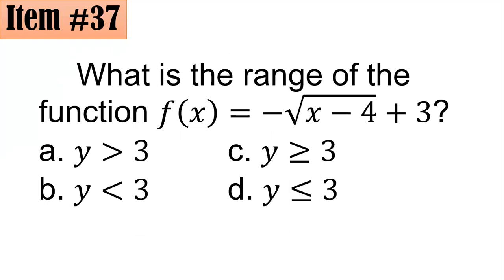Item 37: What is the range of the function f(x) equals negative square root of (x minus 4) plus 3? Is it y greater than 3, y less than negative 3, y greater than or equal to 3, or y less than or equal to 3? The square root expression can be zero, so zero plus 3 gives 3, meaning 3 is one value in the range — so options a and b are incorrect.